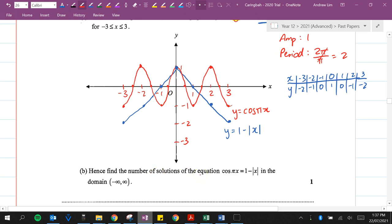The number of solutions means how many times do they intersect each other? Well, I'm just going to highlight those points that intersect each other here. One, two, three, four, and five. So, there will be five solutions.